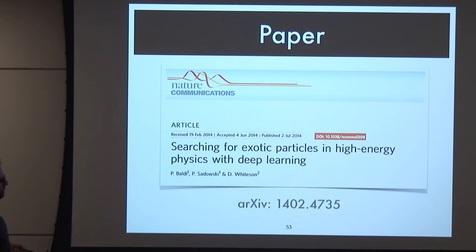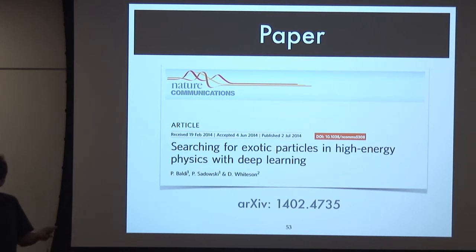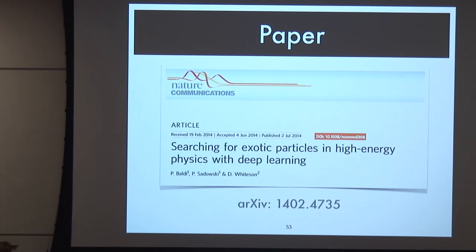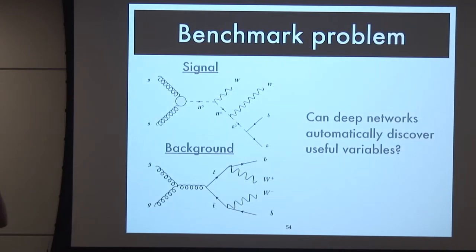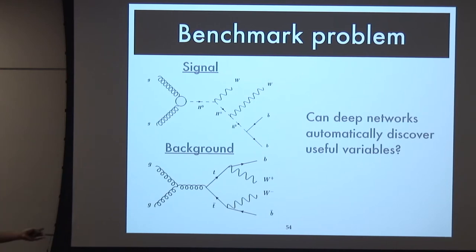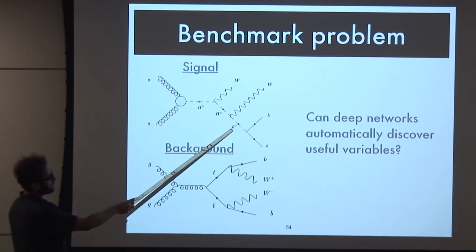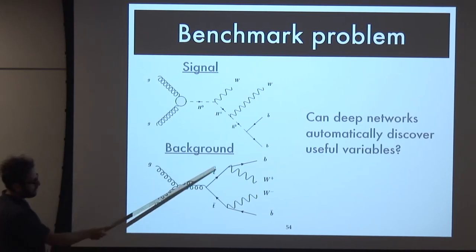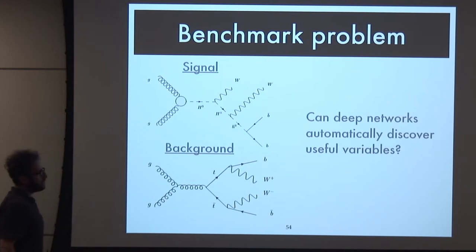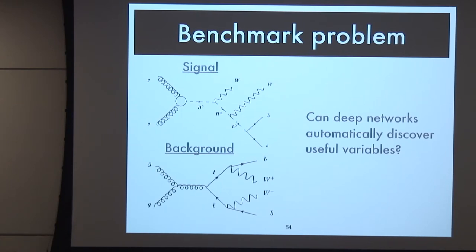Around 2012, the speaker went to the CS department and described the state of particle physics machine learning. Our neural networks were kind of dumb - throwing raw data at them just didn't work very well. The CS colleagues said they had much better tools. A toy problem was set up: a heavy Higgs to a charged Higgs to the standard Higgs radiating Ws, with TTbar background giving also two Ws and two Bs. The question was: can deep networks automatically discover how to separate these two things just given low-level information?